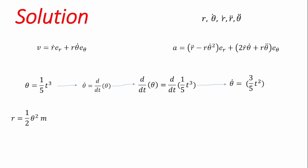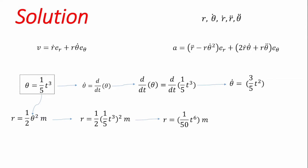We know that r, the radial position of the object at every point in time, is a function of the angular position: r = ½θ². Since θ = (1/5)t³, if we substitute this value of θ into the equation for r, we get r = (1/2) × (1/5)t³ squared, which simplifies to r = (1/50)t⁶.